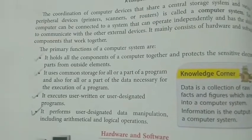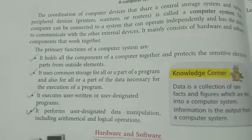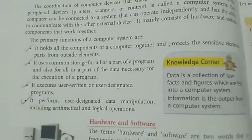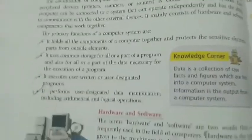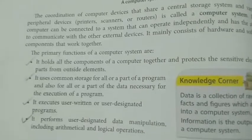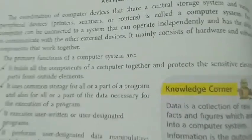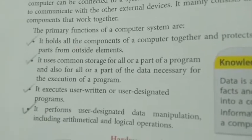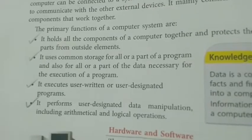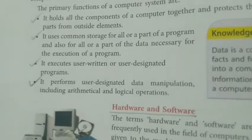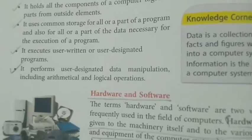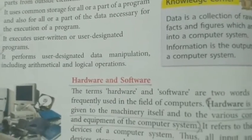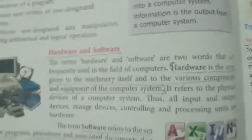The book gives four primary functions of a computer system. First, it can be added to all the components of a computer and protects sensitive electronic parts from outside elements. Second, it uses common storage for all parts — normally the hard disk. Third, it executes user-written or user-defined programs. Fourth, it performs user-designated data manipulation including arithmetic and logical operations.